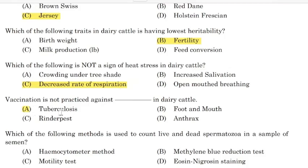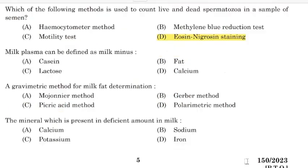Correct answer: Option A — Tuberculosis. Milk plasma can be defined as milk minus — Correct answer: Option B — Fat.